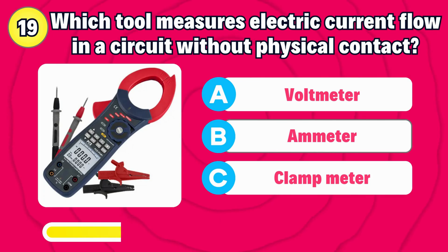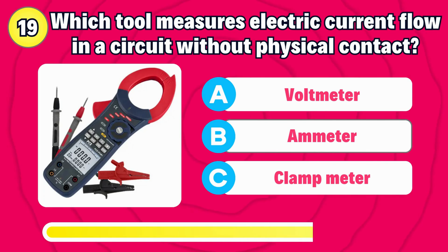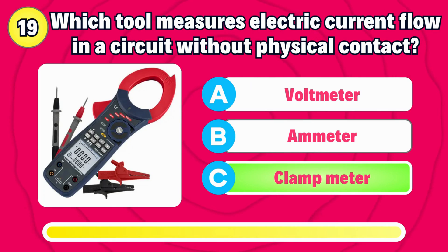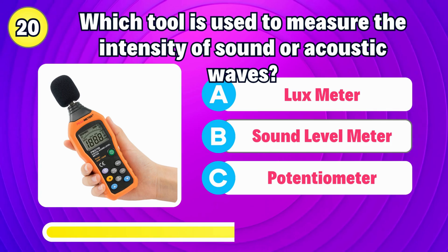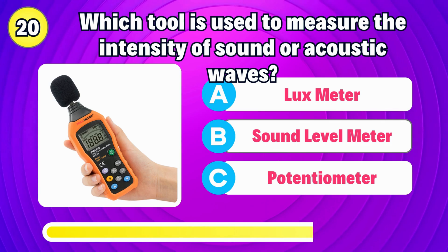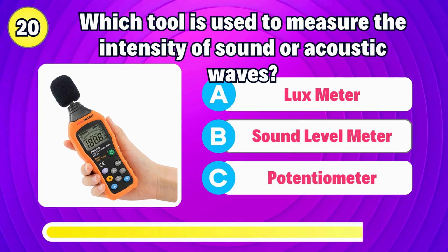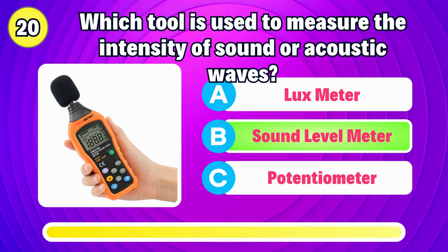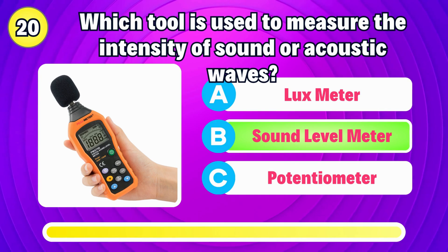Which instrument is used to measure electric current flow in a circuit without physical contact? Correct, it's a clamp meter. Which tool is used to measure the intensity of sound or acoustic waves? The answer is sound level meter.